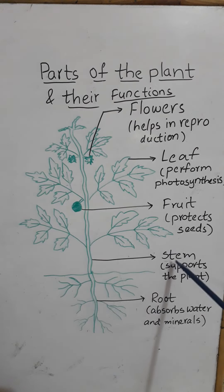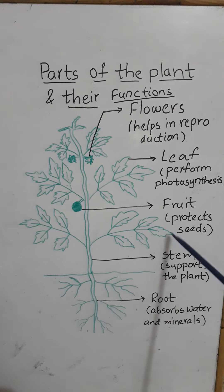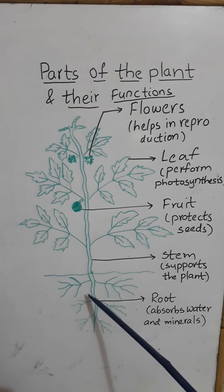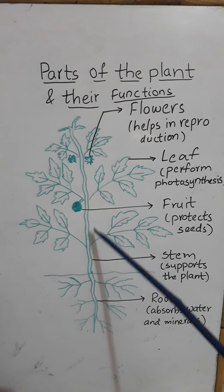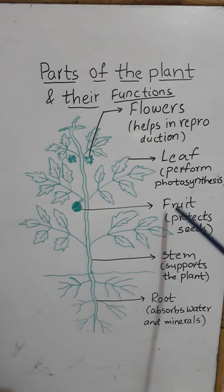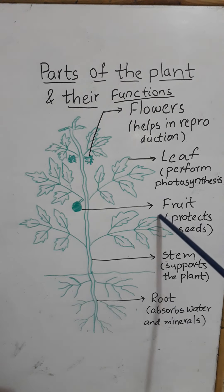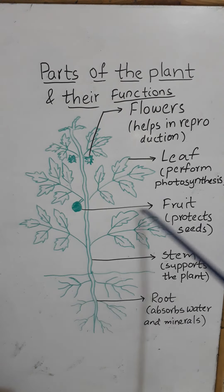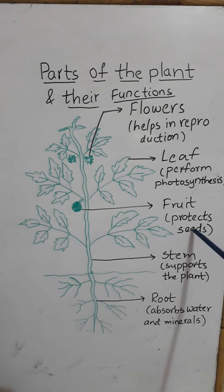This is the stem. The stem supports the plant to make it rigid from the ground. These fruits mainly protect the seeds.